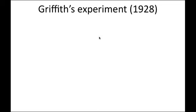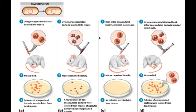Griffith's experiment in the 1900s was how scientists figured out that microbes could gain new information from other microbes, viruses, and other sources. He took a live encapsulated, very virulent bacteria and injected it into a mouse — the mouse died. He re-isolated the bacteria and got the exact same virulent form. This made complete sense.